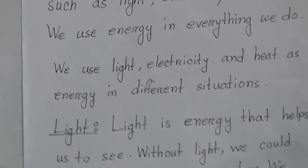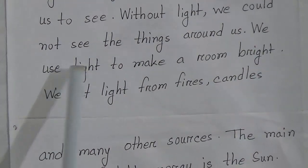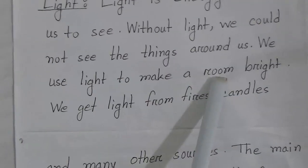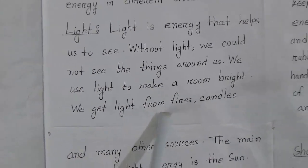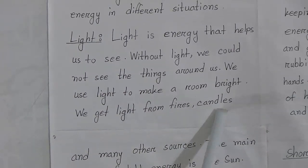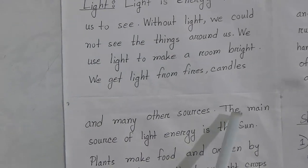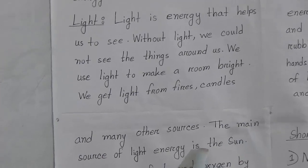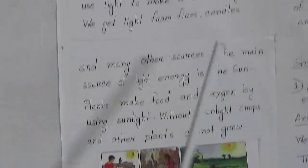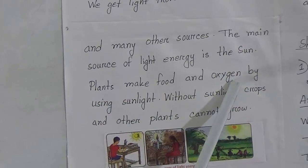We use light to make a room bright. We get light from fires, candles, and many other sources. The main source of light energy is the Sun. Plants make food and oxygen by using sunlight.